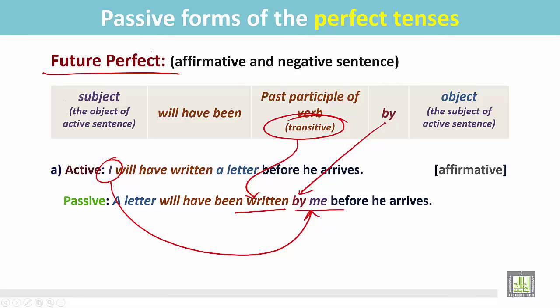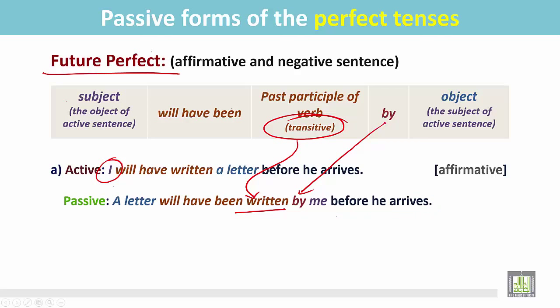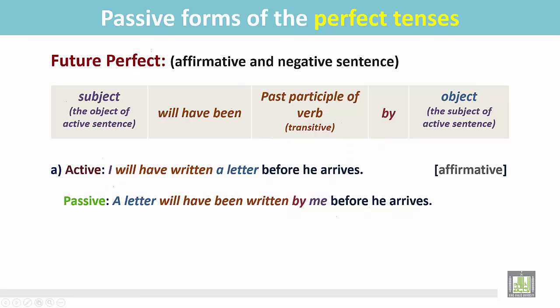The object is 'me.' After the conjunction 'before,' there is the clause 'he arrives,' but there is no object for this verb, so we do not change this sentence. The final sentence is in the affirmative as a statement in the passive.